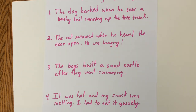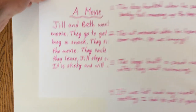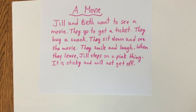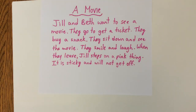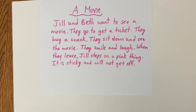Now I have one last example — it's a bit of a mini story. It's called 'A Movie.' Jill and Beth want to see a movie. They go get a ticket, they buy a snack, they sit down and see the movie. They smile and laugh. When they leave, Jill steps on a pink thing. It is sticky and will not come off. We can make an inference from this — it doesn't tell us what the pink thing is. Think about something pink, something sticky and pink that will not come off, and that Jill stepped on. Those are the clues.